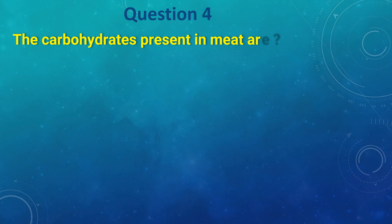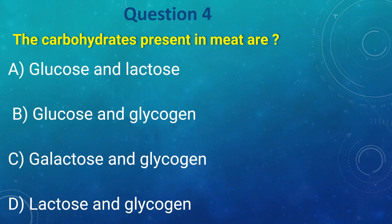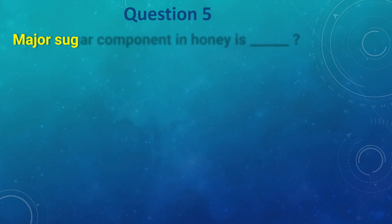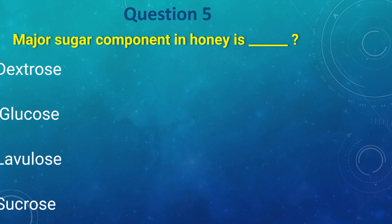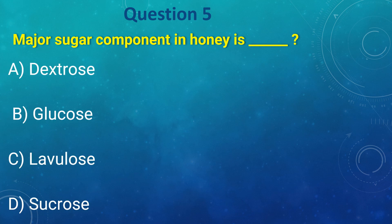The carbohydrates present in meat are: a) glucose and lactose, b) glucose and glycogen, c) galactose and glycogen, d) lactose and glycogen. The answer is b) glucose and glycogen. Major sugar component in honey is: a) dextrose, b) glucose, c) levulose, d) sucrose. The answer is c) levulose.